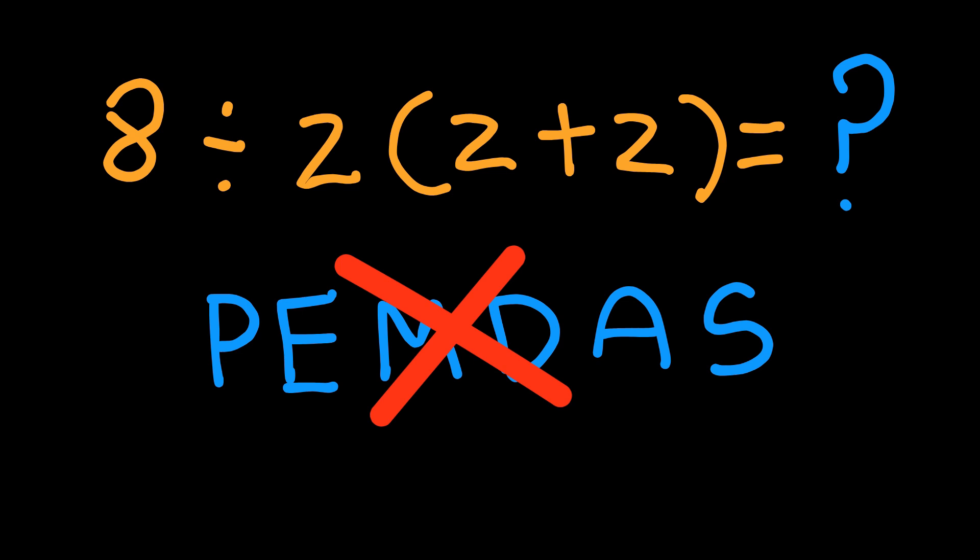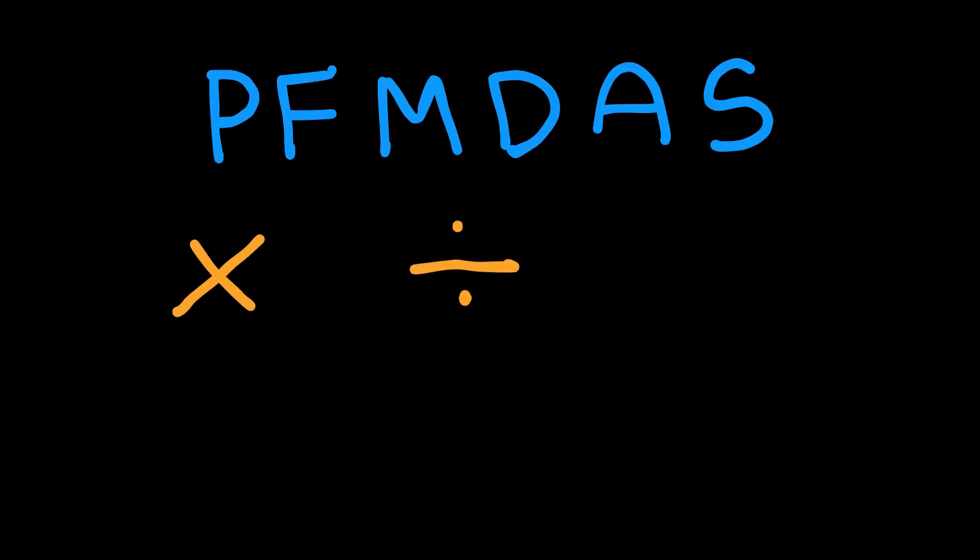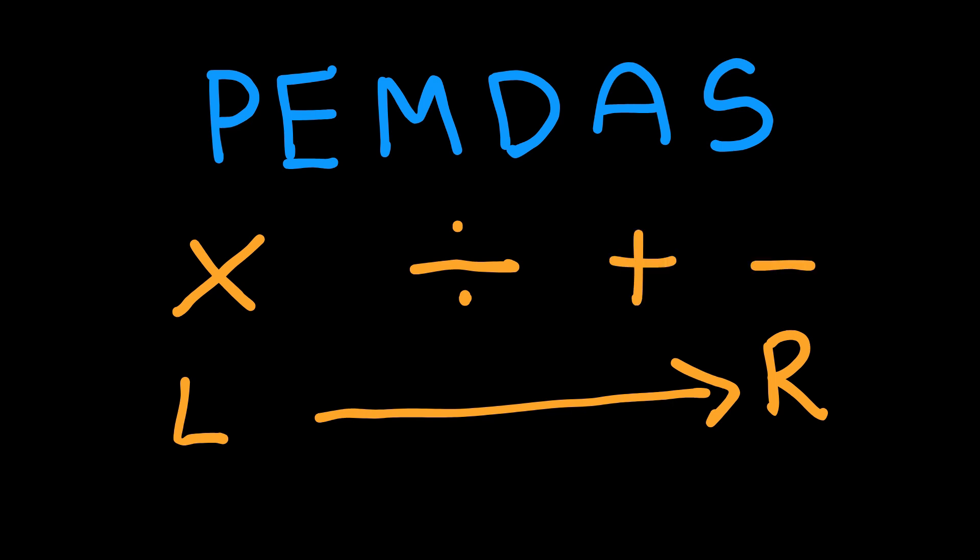You see, multiplication and division are not ranked differently. They are at the same level. You go from left to right. Same thing with addition and subtraction. You do them in order from left to right. Not all multiplication before division. And that's where the confusion starts.